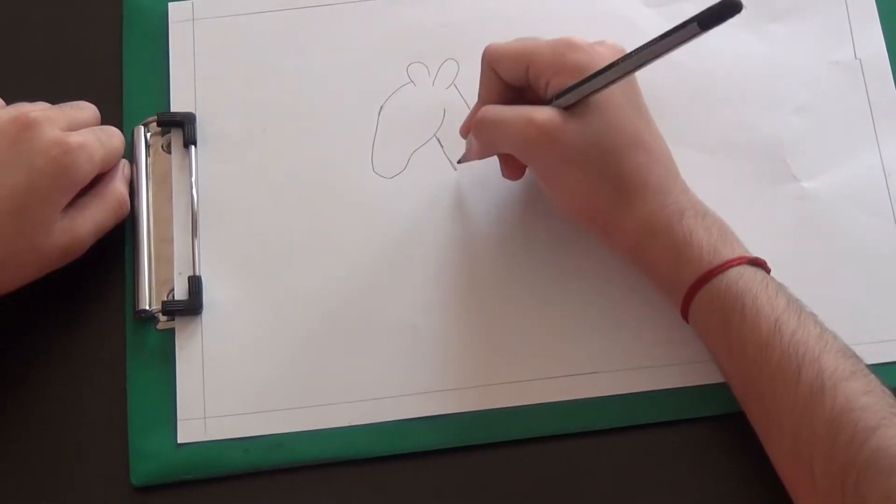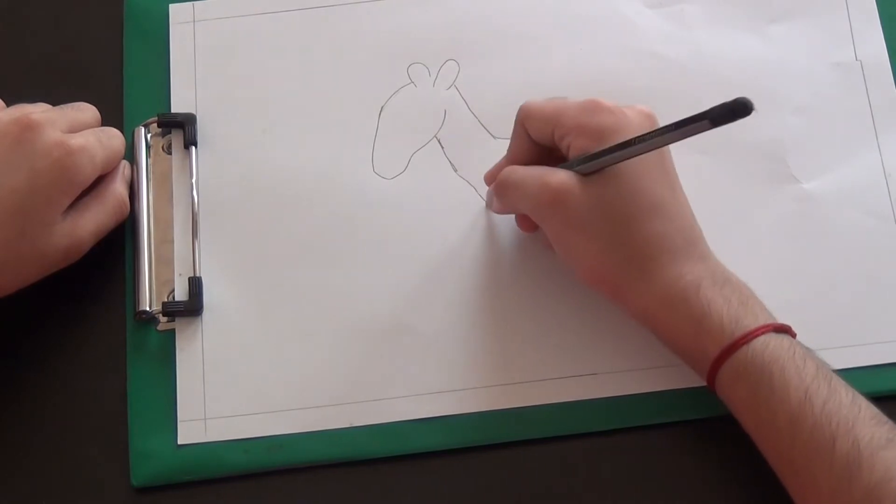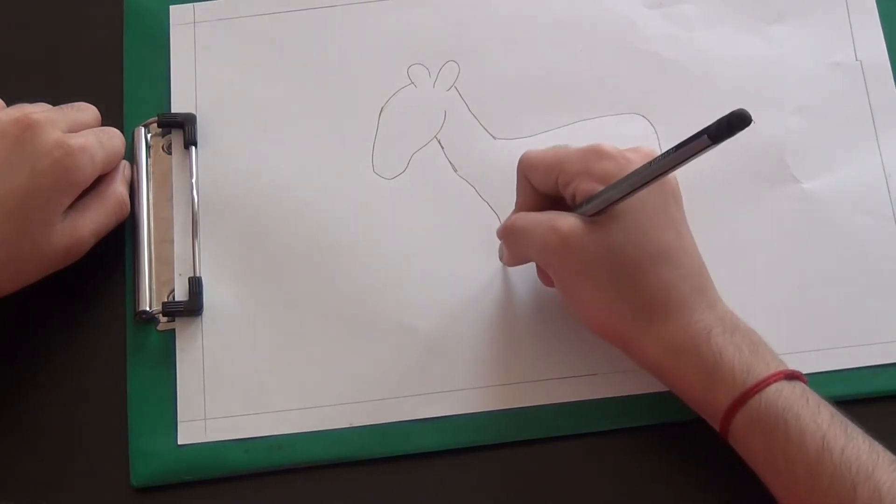Then we make it a little longer, not too long, and just start with the leg. Make like this kind of hump on the leg.